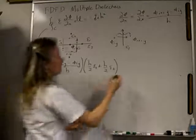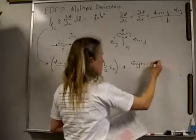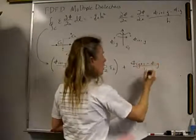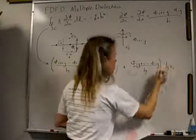Now let's do the top part. That is going to be phi IJ plus 1 minus phi IJ divided by H. And that's going to be multiplied by H times epsilon 1.